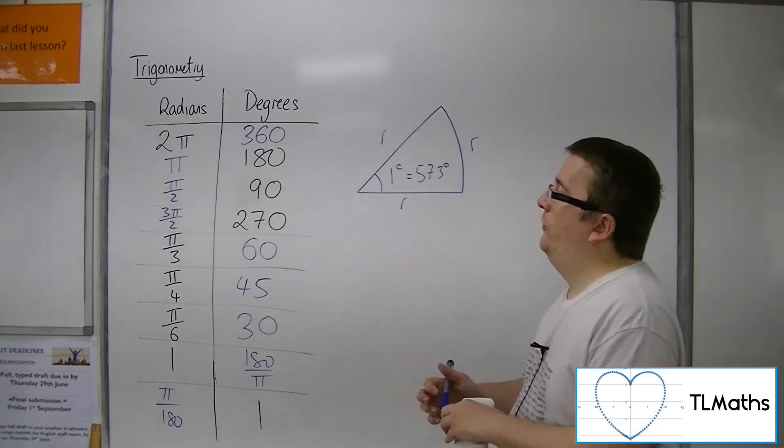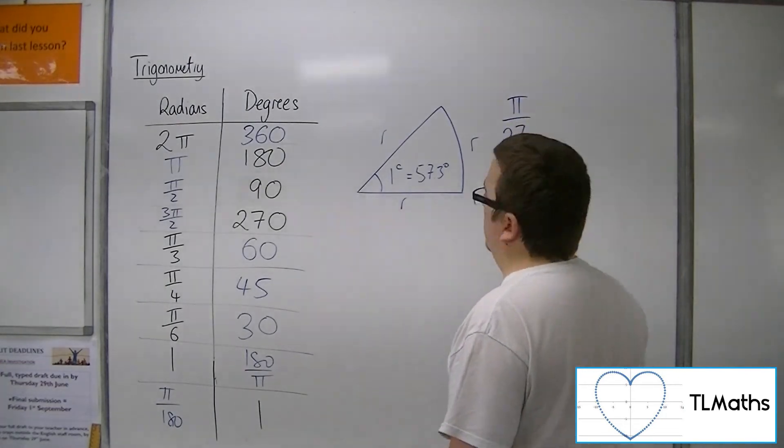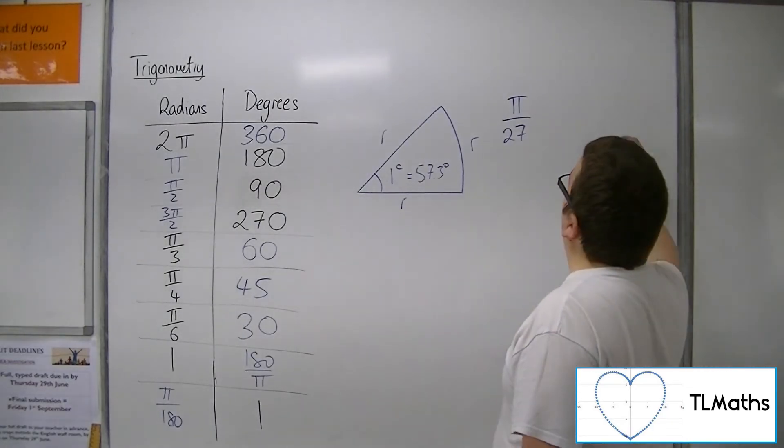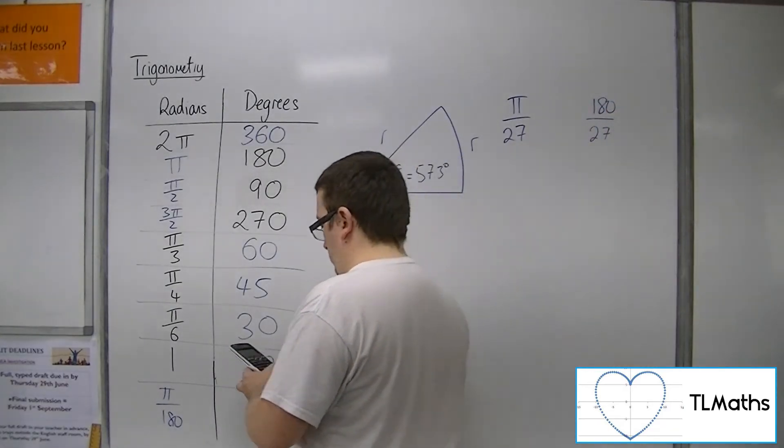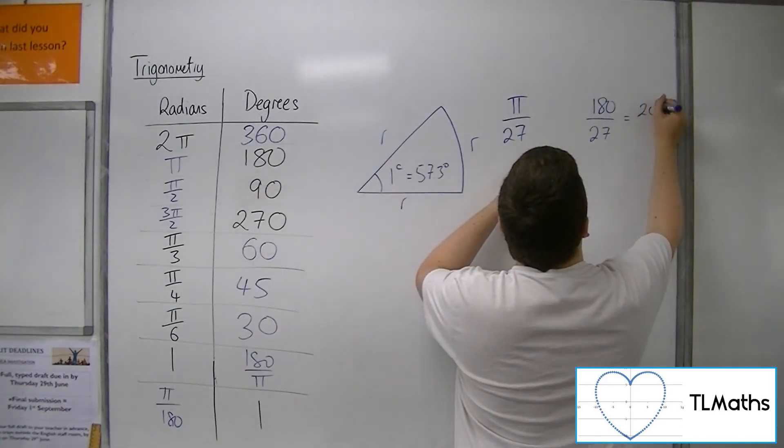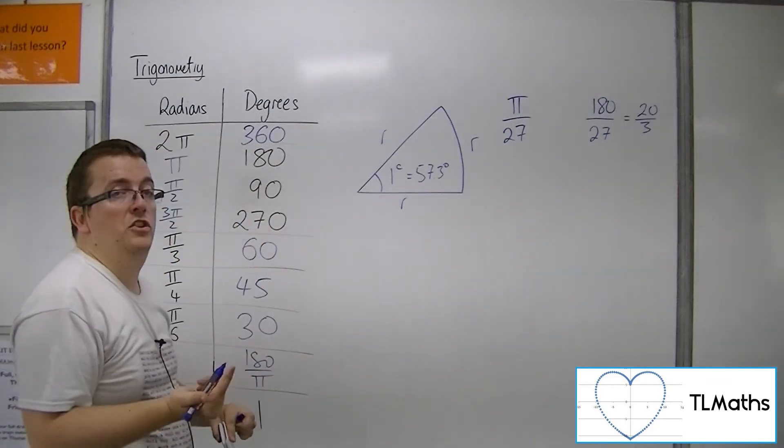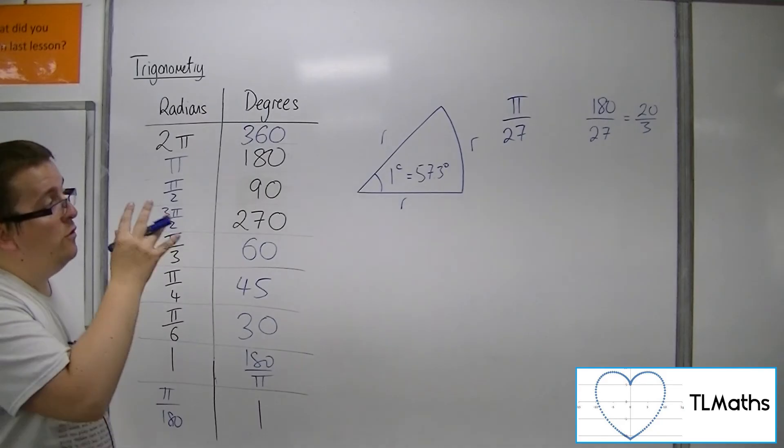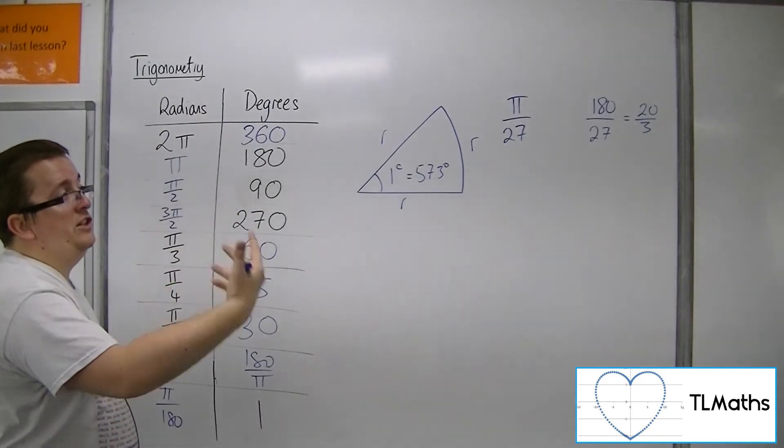So if I wanted what was pi over 27, say, in degrees, then I know I can just find 180 divided by 27, which is 20 over 3, which is 6.67 degrees. So I could work out whatever I want if I know that I need to convert from radians to degrees or degrees to radians.